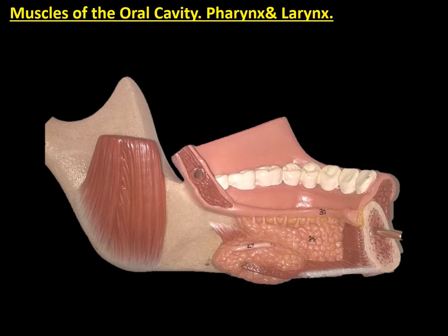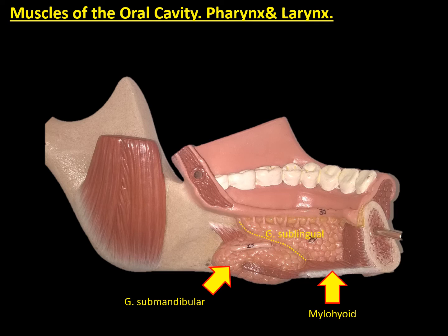In this view of the floor of the mouth, we can see the mylohyoid muscle, which is a suprahyoid muscle that makes the diaphragm of the floor of the mouth, as the posterior part is being occupied by the submandibular gland. Lateral to this submandibular gland, we are also observing the sublingual gland. At the posterior part of the body of the mandible, we can see the departure of two muscles of the floor of the mouth, which are the geniohyoid at the inferior part and the genioglossus at the superior.